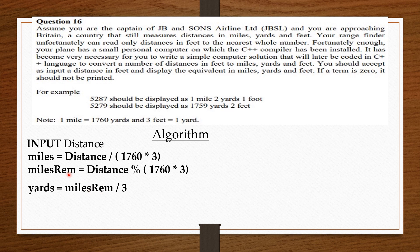Again, we are going to check if there is a remainder in feet after converting to yards. So, we say yardsRem = milesRem % 3. Now, if there is still a remainder in feet after converting to yards, we just assign that remainder to feet. So, we say feet = yardsRem.